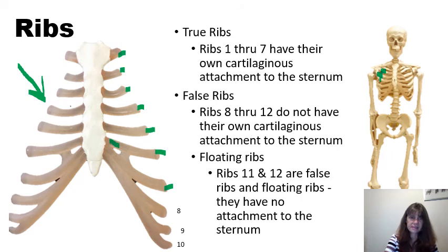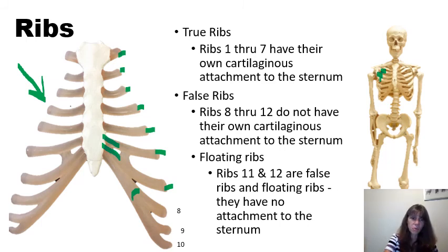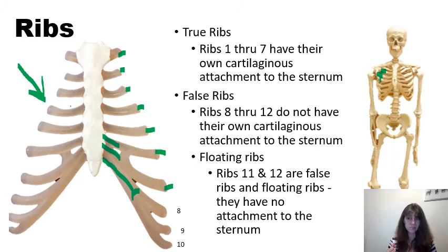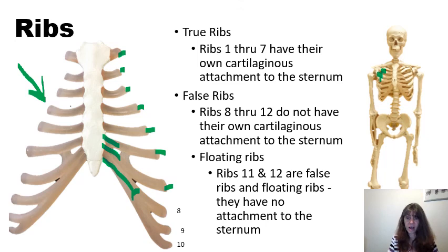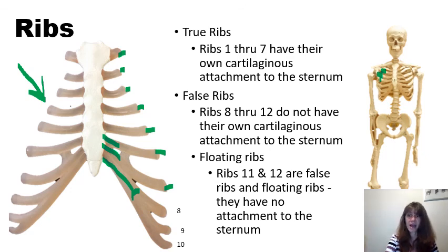Ribs eight, nine, and ten are going to attach to costal cartilage that fuses together as one unit that will attach to the sternum. Therefore, ribs eight, nine, and ten are referred to as false ribs because they don't have their own individual costal cartilage attachment to the sternum. Ribs 11 and 12 have no anterior attachment to the sternum — therefore, they are not only false ribs, they are additionally floating ribs. They are floating ribs because they have no anterior attachment to the sternum at all.